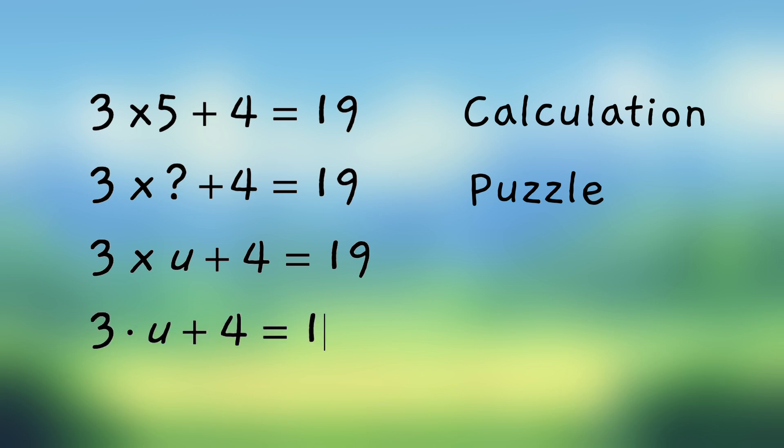So here we have what we call an equation. It's a math puzzle, and it says 3 times some number plus 4 equals 19. And we're using a letter to stand for that some number. You can use any letter you want. The most common one is x. Here we're using U, that's fine.